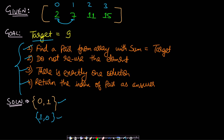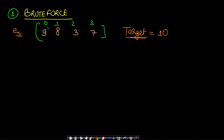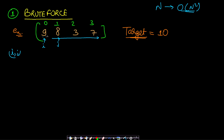We will discuss three different techniques for solving this. The simplest is the brute force approach where we try all possible pairs. For an array of size n, the total number of pairs is O(n²). We take the first element with variable i, and it can form a pair with all the rest of the elements using j. The first pair is i comma j — for example 9 comma 8 — whose sum is greater than the target, so we move j forward.